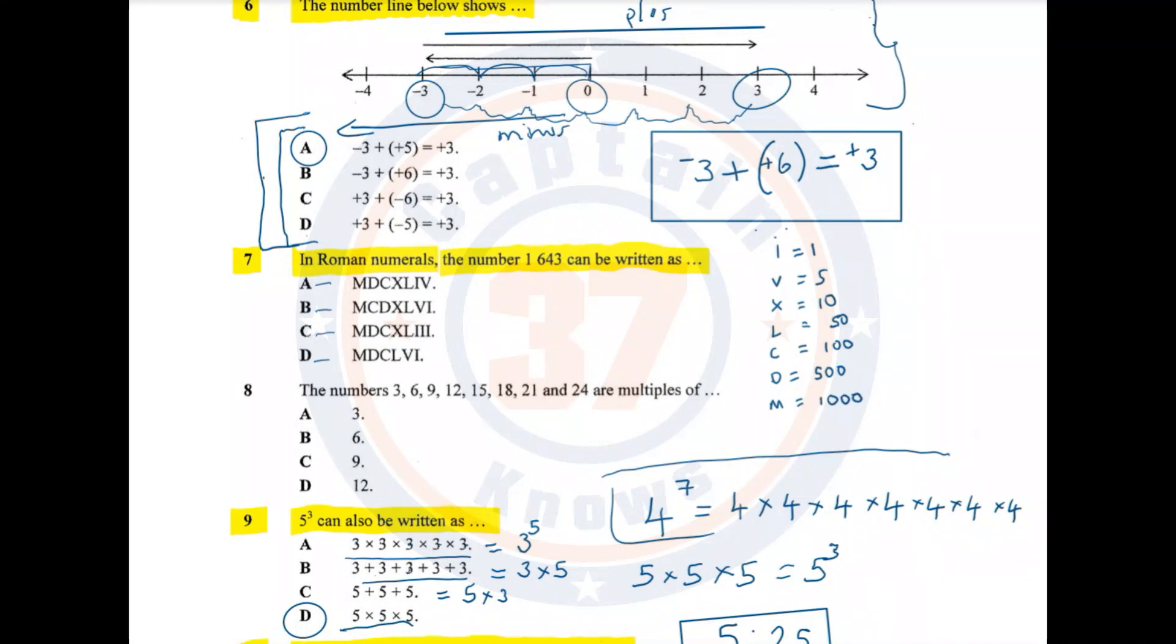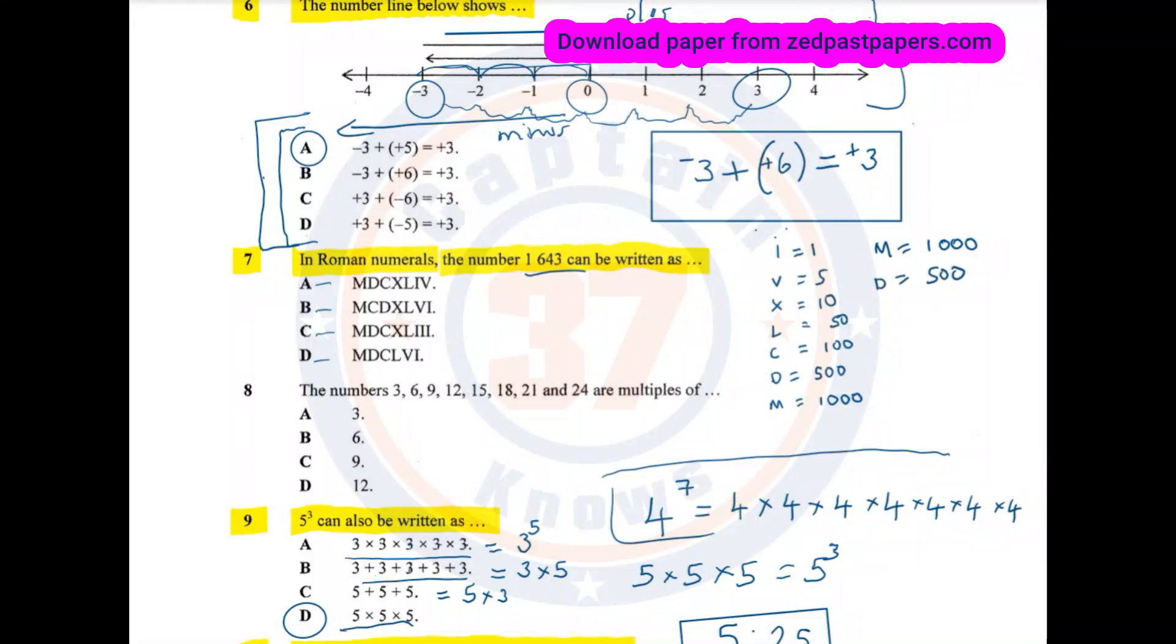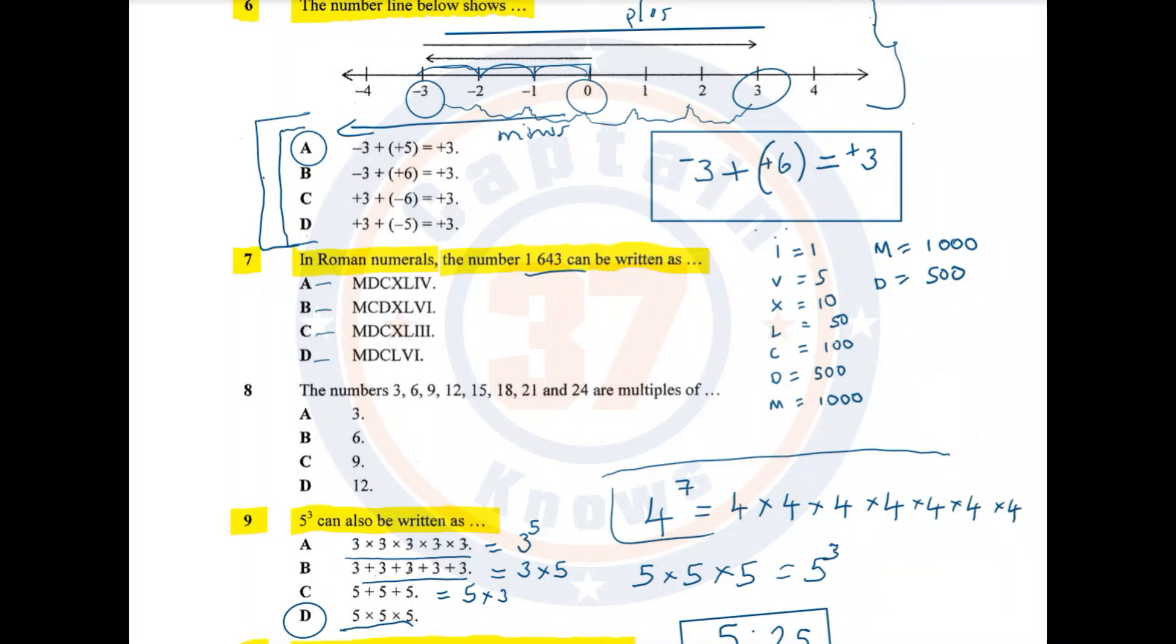We already know that the first letter is going to be M because this is in its thousands, so it's 1000. Then 500, we're going to get D and write 500. Because there is no direct way of writing 600 in Roman numerals, the closest biggest number to 600 is 500. And then to that 500, we add 100. So we're going to add C to make it 600.